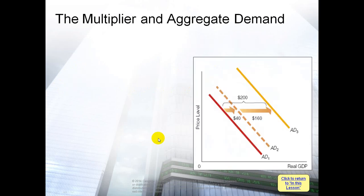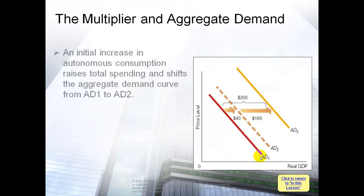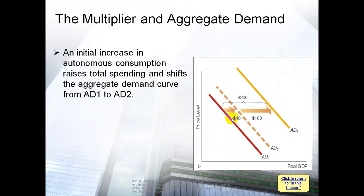Graphically, an initial increase in autonomous consumption raises total spending and shifts the aggregate demand curve from AD1 to AD2.